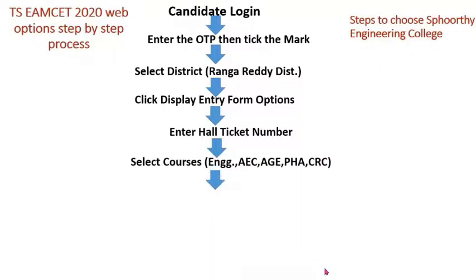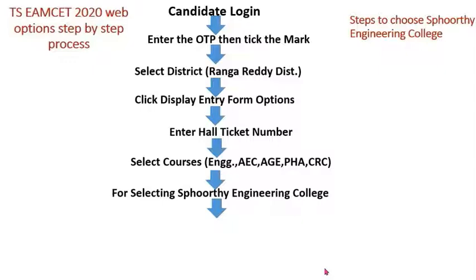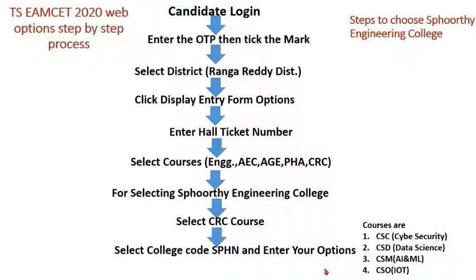In the Display Entry Form, you will be asked to enter your hall ticket number in the provided box at the top of the screen. You can then select courses such as ENG, AE, CAG, PHA, and CRC. To select Spurthy Engineering College, choose the CRC courses — scroll down the screen to find them — and then select SPHN.